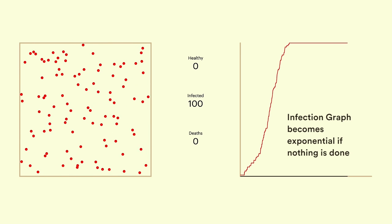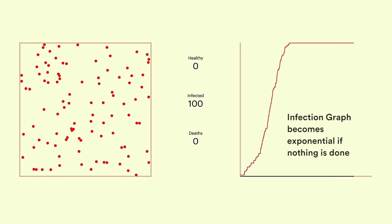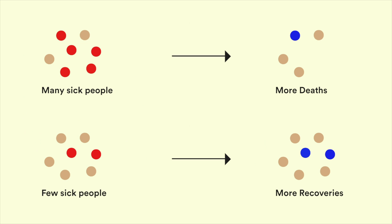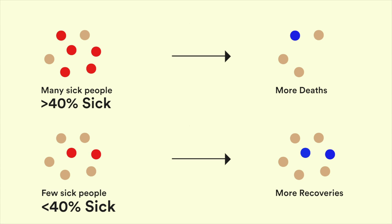Let's now add another dimension of realism. People don't just stay infected — they also recover and they also die. If there is a huge number of people who are sick, the medical system cannot take care of everyone and thus more people die. But if the proportion of sick people is less, doctors can pay attention to all the patients and the recovery rate is way higher. So let's have a rule wherein if more than 40% of the population is sick, more people die; otherwise, more people recover.